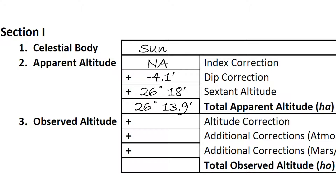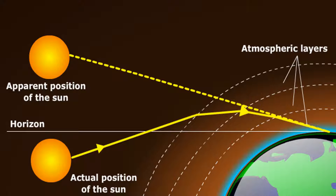First, we need to obtain our altitude correction on the site reduction form. This correction is due to the way light bends as it passes through our atmosphere. The closer a celestial body gets to the horizon, the more pronounced this effect becomes.